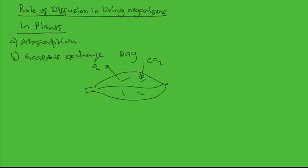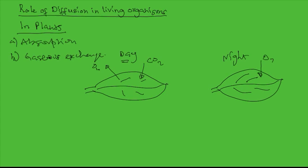While at night, in the absence of light, there is no photosynthesis, only respiration. Respiration requires oxygen, so oxygen diffuses from the atmosphere into the leaf through the stomata.